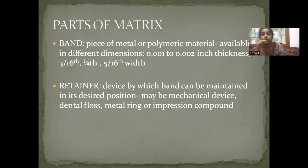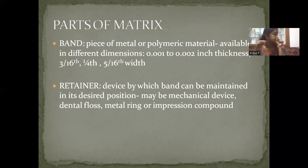What are the parts of a matrix? You have the band — a piece of metal or polymeric material available in different dimensions: 0.001 to 0.002 inches thickness; width is 3/16th, 1/4, 5/16th and so on. The retainer is a device by which the band can be maintained in its desired position. It is either a mechanical device or you can hold it with orthodontic wire, dental floss, or even impression compound.